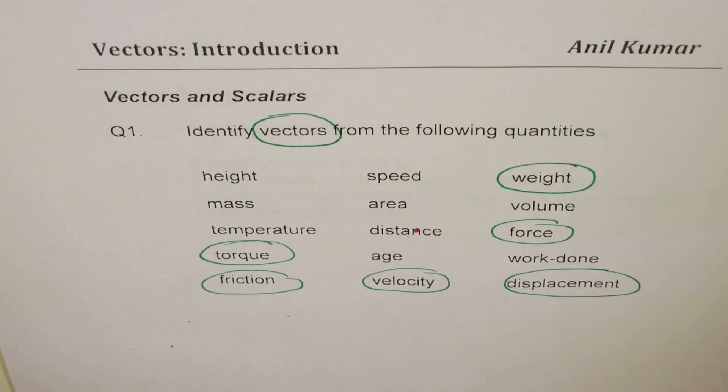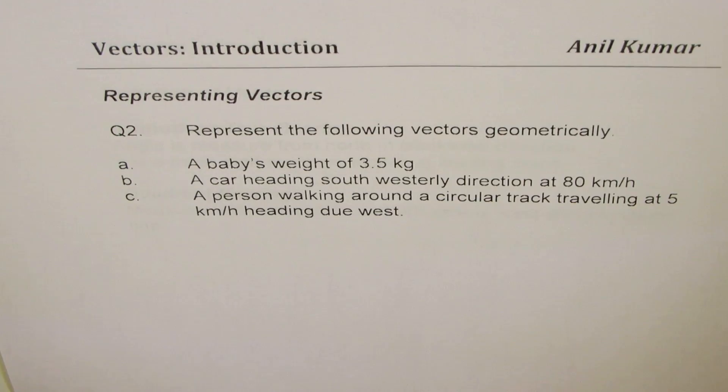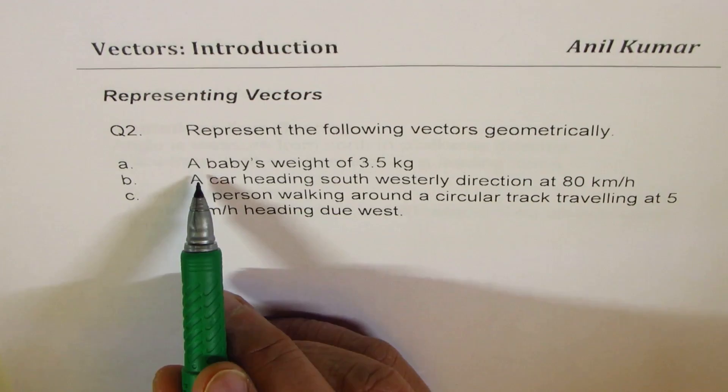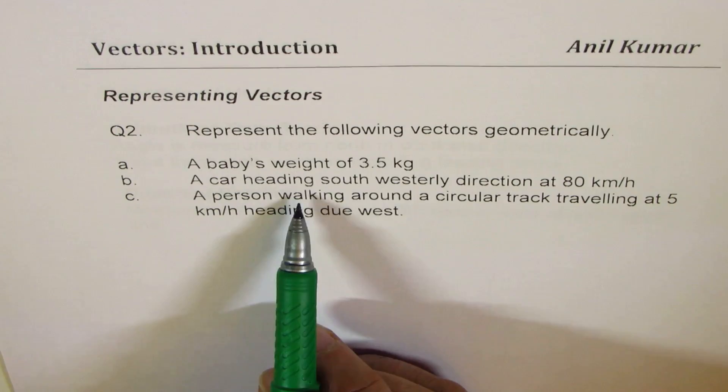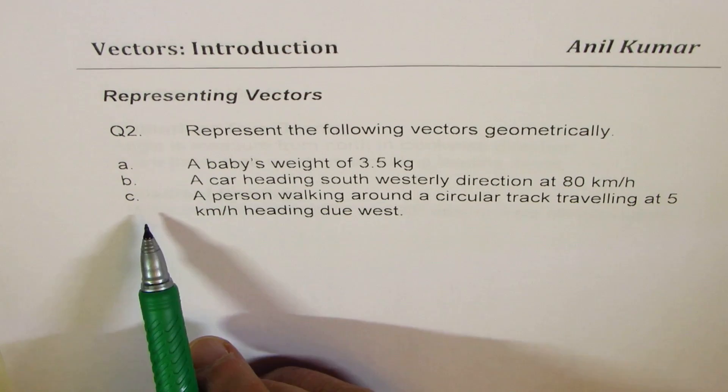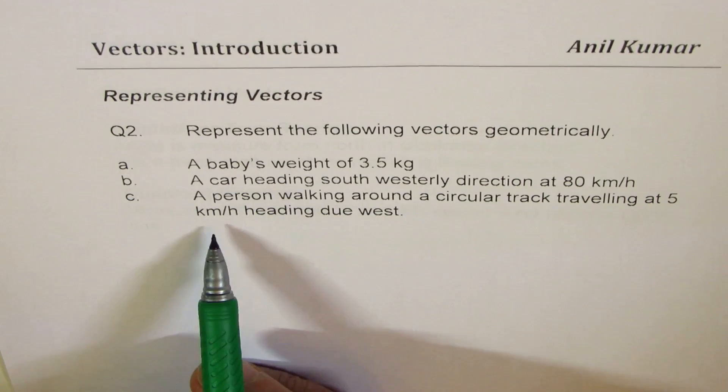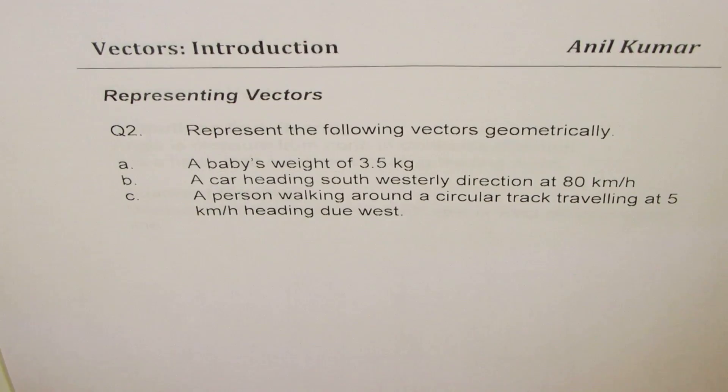Question two: represent the following vectors geometrically. (A) a baby's weight of 3.5 kg; (B) a car heading in a southwesterly direction at 80 km/h; (C) a person walking around a circular track, traveling at 5 km/h, heading due west. Take your time, represent all of them as vectors, then check with my solution.